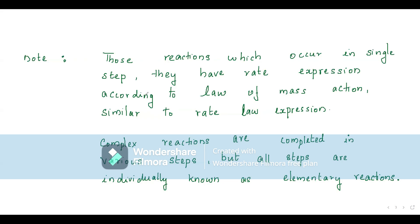In a single step or elementary reaction, the rate calculated from the law of mass action and from experiment are both the same. Complex reactions are completed in multiple steps, but every individual step in a complex reaction is called an elementary reaction.